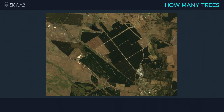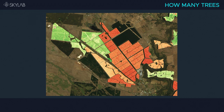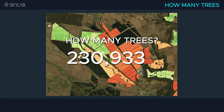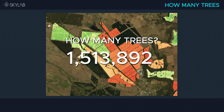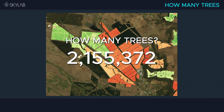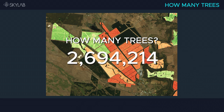We at Skylab count every single tree, as in this example of an Australian plantation where we counted 2,694,214 — give or take 10.